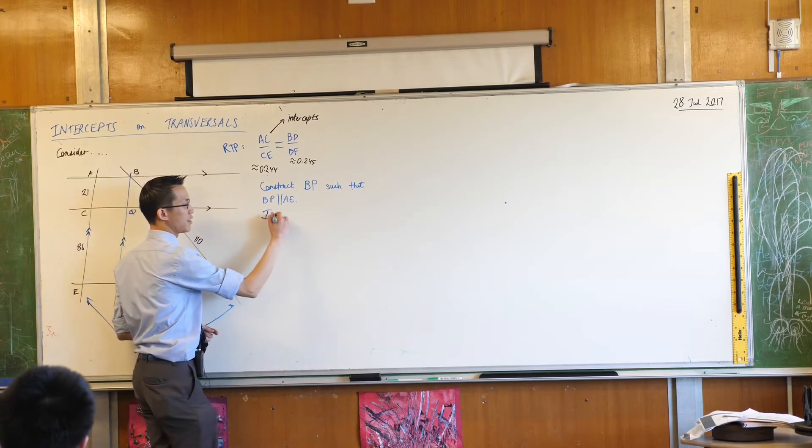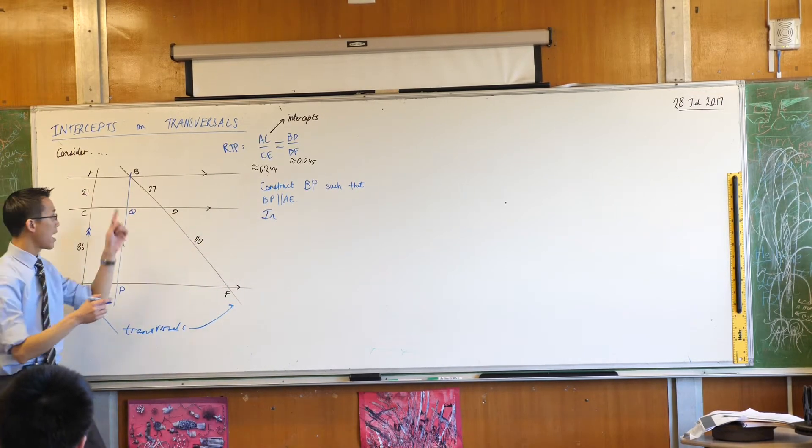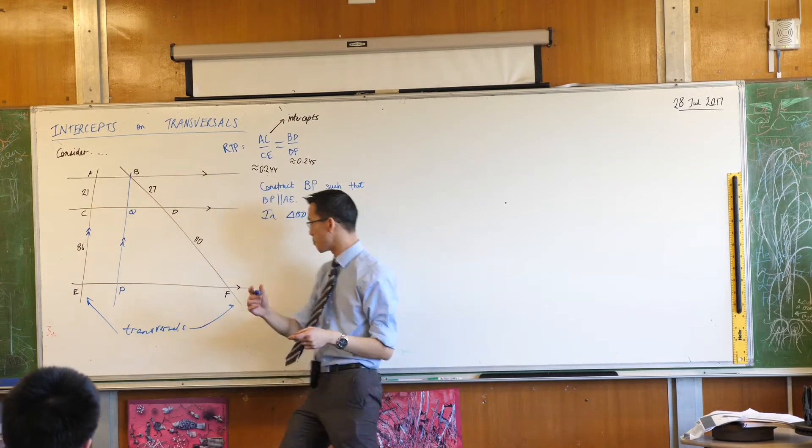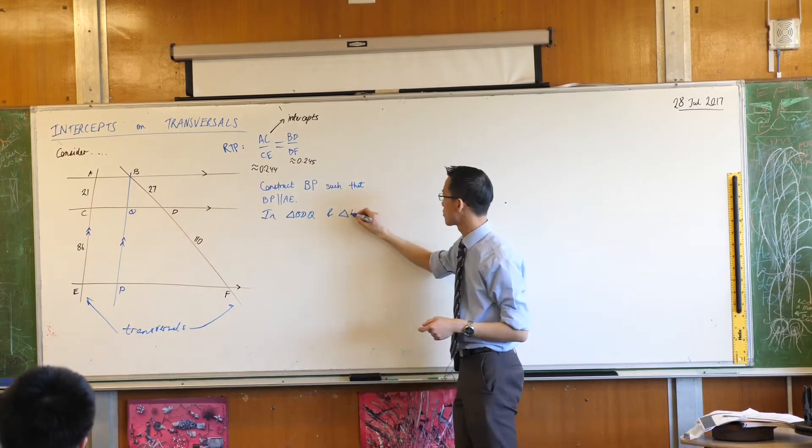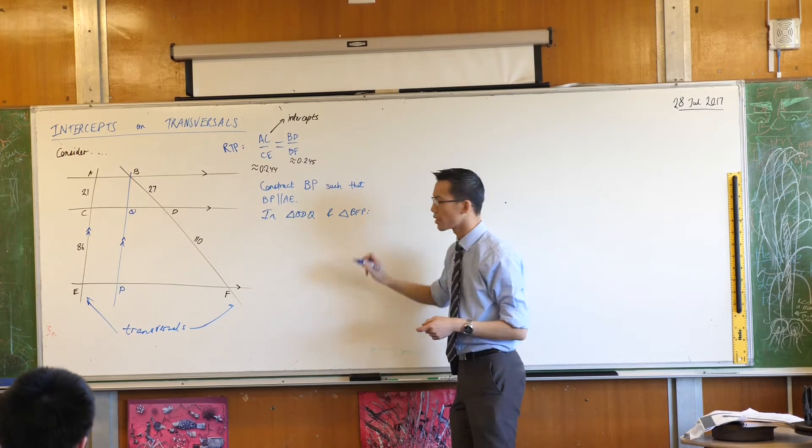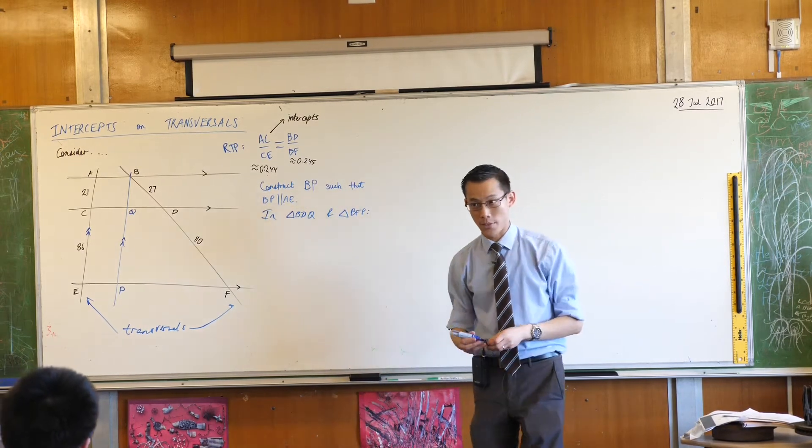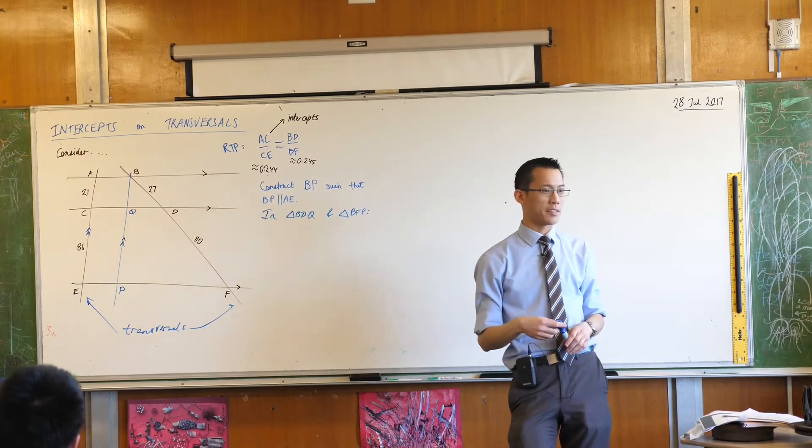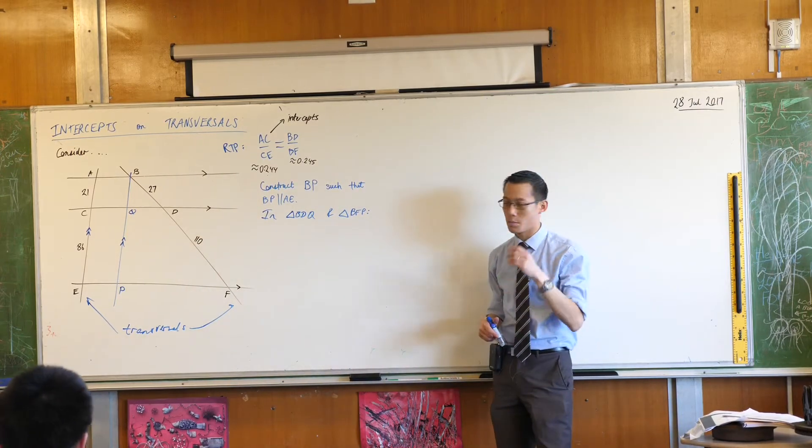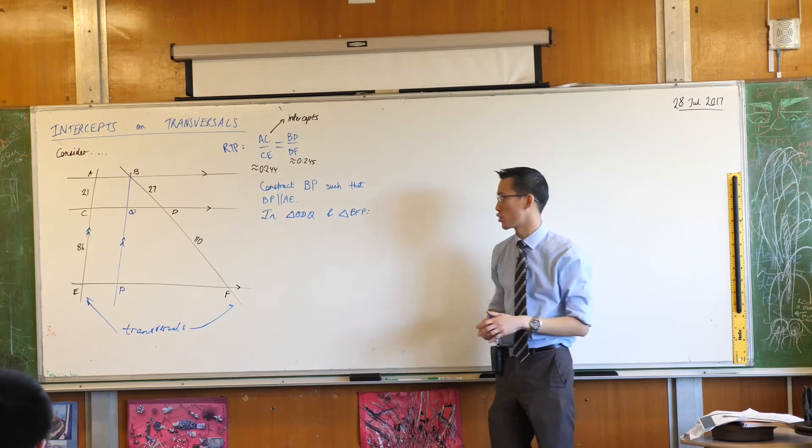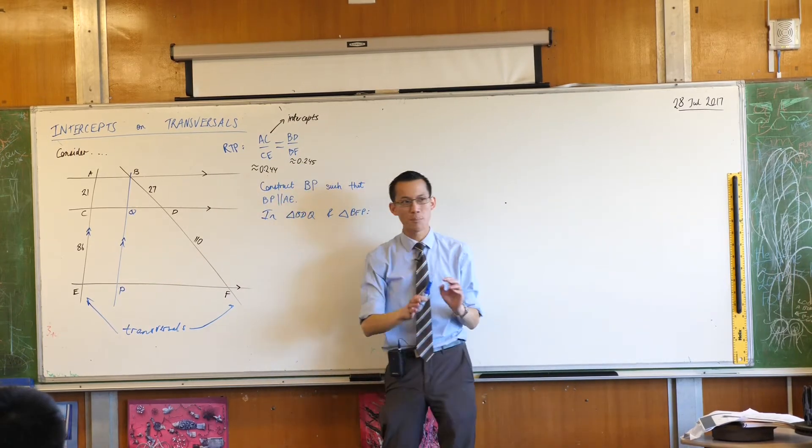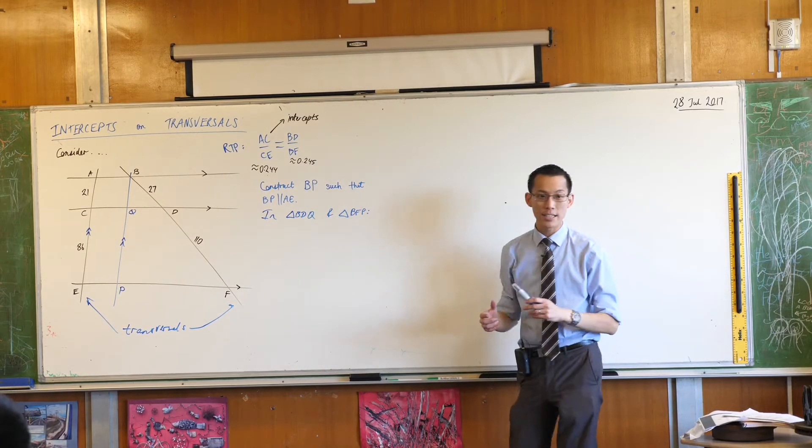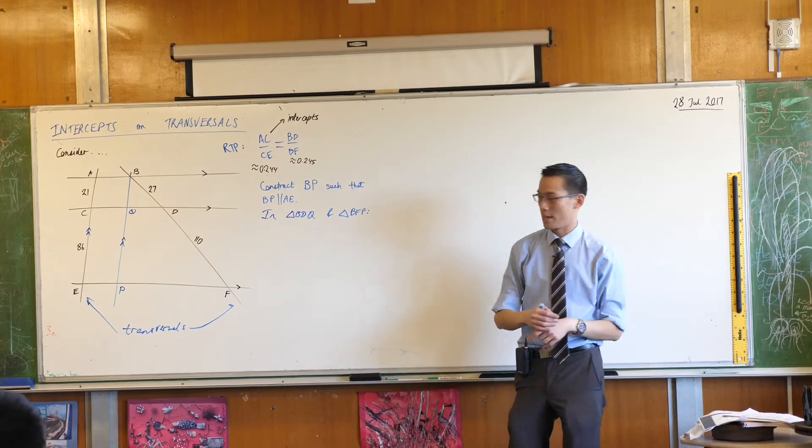So the first line I'm gonna say is in triangle BDQ and triangle BFP. I'm gonna now start to talk about some features. I don't know enough about the lengths yet to be able to say something about these being in proportion because I measured these and it's not precise enough. So I'm gonna instead appeal to angles rather than sides.